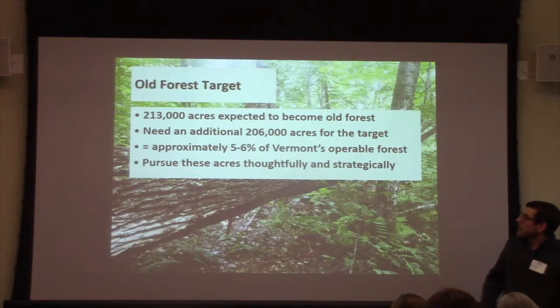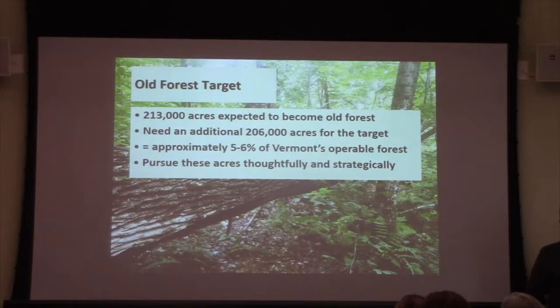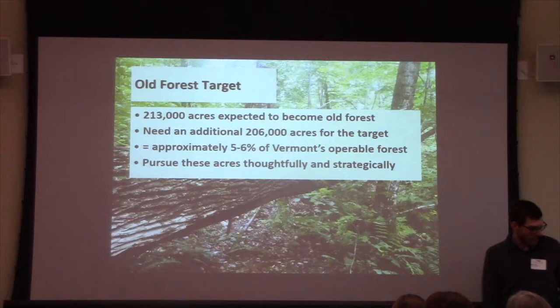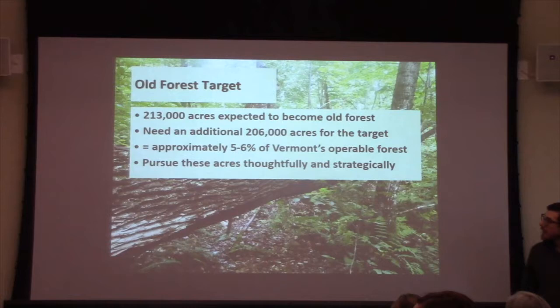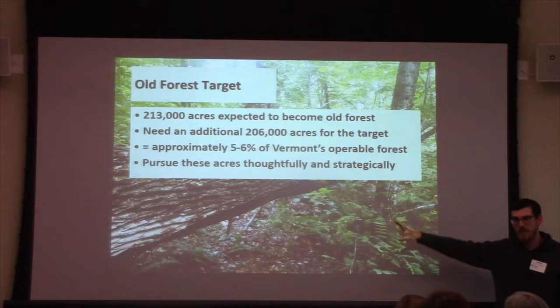Adding those up, we have 213,000 of that 419,000 acres. To complete that target, we'd need another 5–6% of Vermont's forest to become old forest — so opportunities for new reserves. The ones highlighted in yellow are where we've met the target, meaning we'll likely have those acres as old forest at some point in the future. Everything not yellow represents places where we could still seek more opportunities. This gives us a framework for pursuing both landscape features thoughtfully and strategically, thinking about biophysical region and forest type.